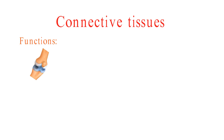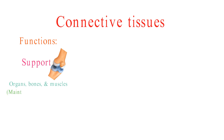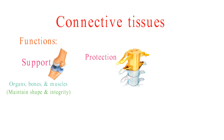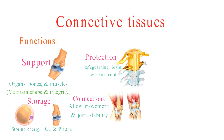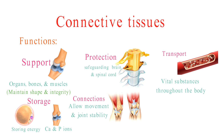Connective tissues serve several vital functions in our bodies. They provide structural support to organs, bones, and muscles, ensuring our bodies maintain their shape and integrity. Connective tissues also offer protection, such as bones safeguarding vital organs like the brain and spinal cord. They facilitate connection by forming tendons and ligaments, allowing for movement and joint stability. Additionally, connective tissues have a role in storage, with adipose tissue storing energy and bones storing minerals like calcium and phosphorus. Blood, as a specialized connective tissue, is responsible for transporting vital substances throughout the body. Lastly, connective tissues house immune cells, contributing to our body's immunity against infections and diseases.